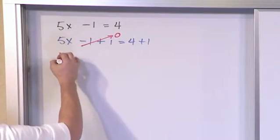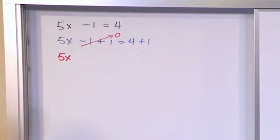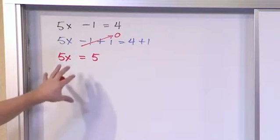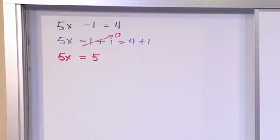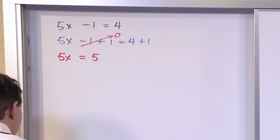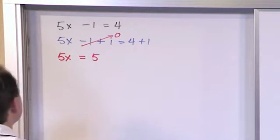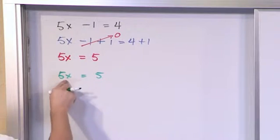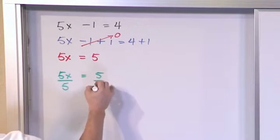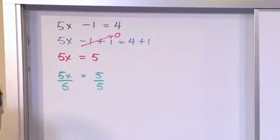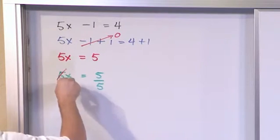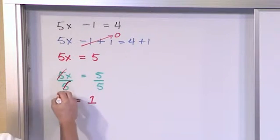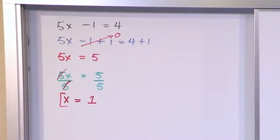So on the left, all you have is 5x, okay? And on the right, 4 plus 1 is going to give you 5. Now this problem looks just like a million other problems we did in the previous section, right? Because we have basically 5x is equal to 5. This is multiplied. The only way to get rid of it is to divide by 5 on both sides. And that is going to cancel the 5 with the 5. And so what you'll be left with is x on the left hand side and 1 on the right hand side. And that is the final answer.